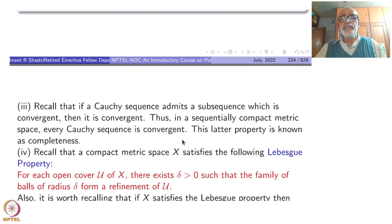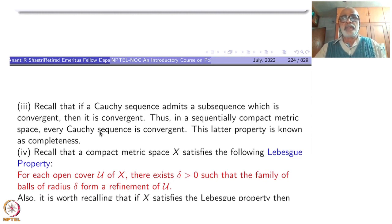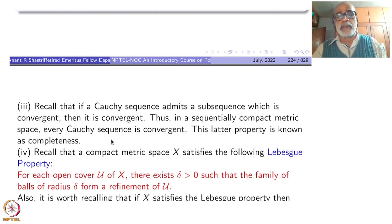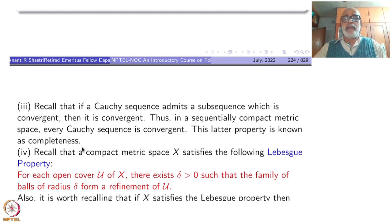Thus, in a sequentially compact metric space — sequentially compact means every sequence has a subsequence which is convergent — every Cauchy sequence will be convergent because it will admit a convergent subsequence. Since it is Cauchy, that Cauchy sequence is convergent. This latter property is known as completeness: every Cauchy sequence convergent is completeness. So somehow when studying sequential compactness we are forced to think about completeness also.